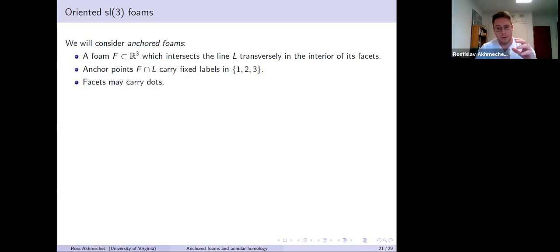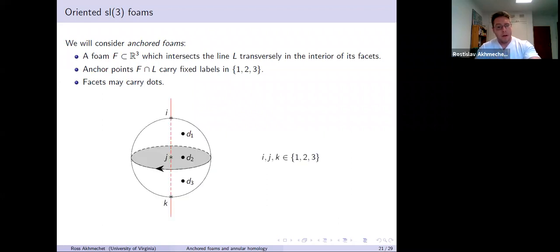This is part of the data of an anchored foam. And as before the facets, here the facets, the two-dimensional parts may carry some dots which can float on the facet but can't jump across the singular parts. Here's an example. The foam topologically is just three discs glued together along the boundary. Here I've indicated on the singular part, the singular circle where the three discs meet, that each of the facets induce this orientation on the circle. There's three total intersection points. Each facet intersects the line once, with some labels in one, two, three, and each facet carries some number of dots.